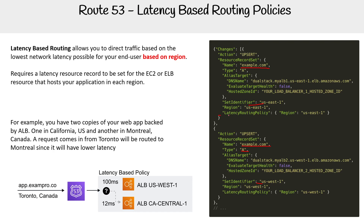Notice that we set latency routing policies based on each record's region. Then we have an alias target to specify where it is going — it doesn't have to be an alias target, but that is what we're utilizing here. Hopefully that is clear, and we will see you in the next one.